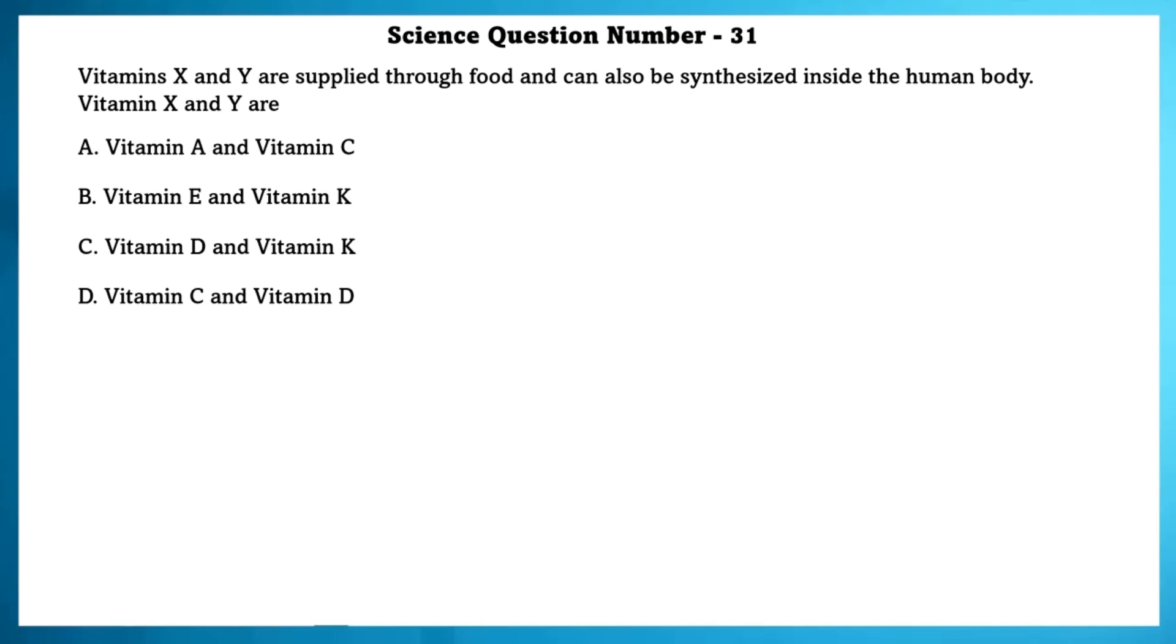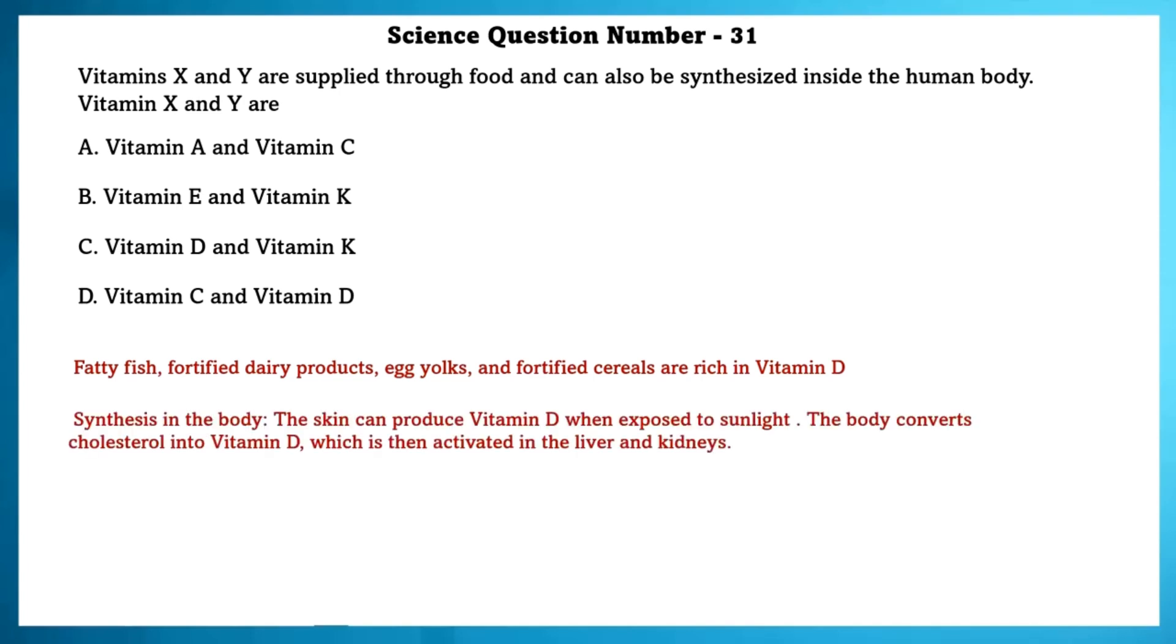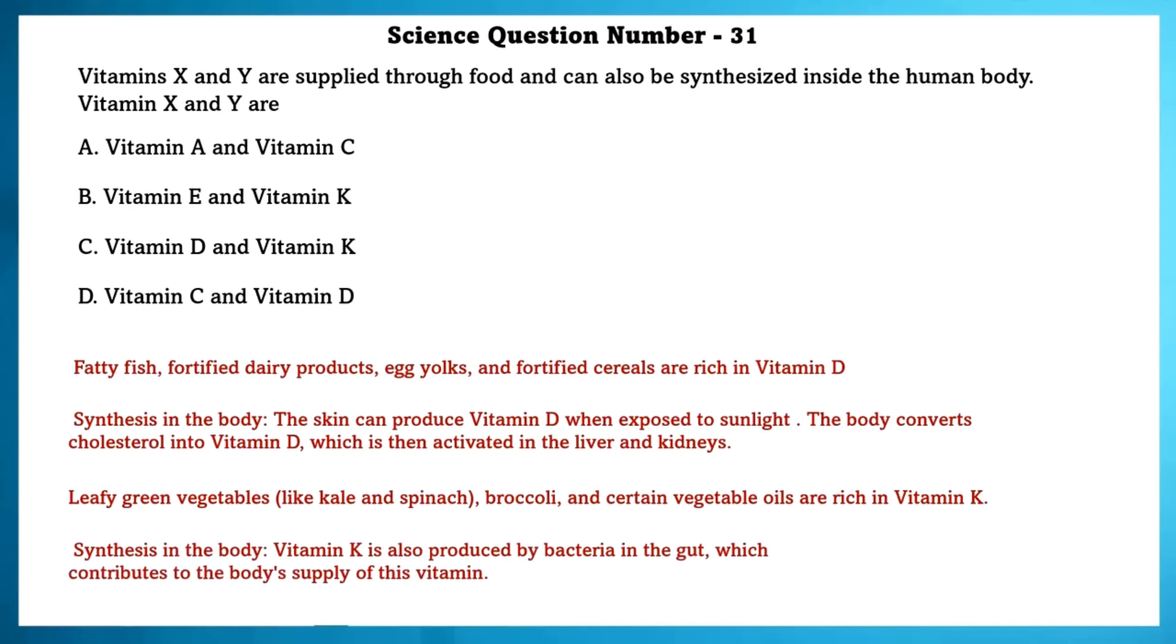Science question number 31. Vitamins X and Y are supplied through food and can be synthesized inside the human body. Vitamin X and Y are fatty fish, fortified dairy products, egg yolks, and fortified cereals are rich in vitamin D. Synthesis in the body. The skin can produce vitamin D when exposed to sunlight. The body converts cholesterol into vitamin D which is then activated in the liver and kidneys. Leafy green vegetables like kale and spinach, broccoli and certain vegetable oils are rich in vitamin K. Synthesis in the body. Vitamin K is also produced by bacteria in the gut which contributes to the body's supply of this vitamin.